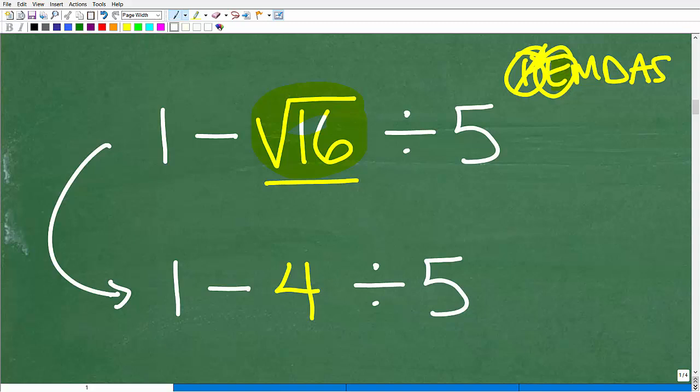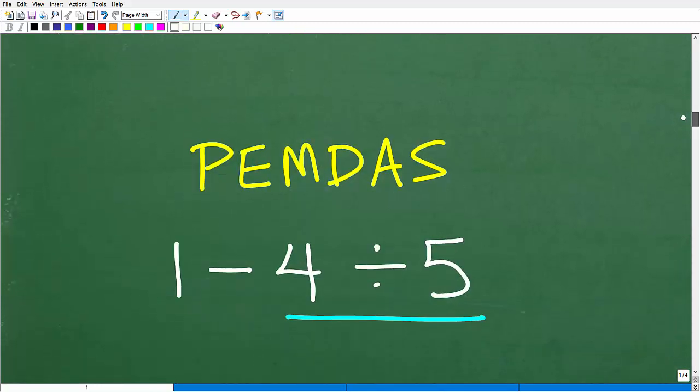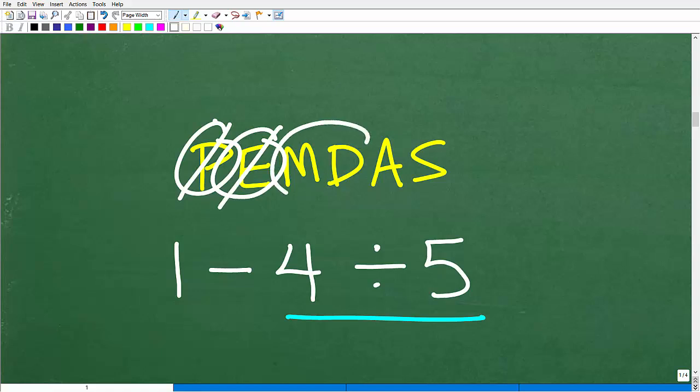Just kind of recite this in your brain. 1 minus 4 divided by 5. Now we have to go back to our PEMDAS because we have some operations here. We have subtraction and division. So what are we going to do next? Referring back to our little checklist, there are no parentheses. We took care of our exponents, our square root. Is there multiplication and division? Yes, indeed. That's always going to trump addition and subtraction. So we have to do the division first.